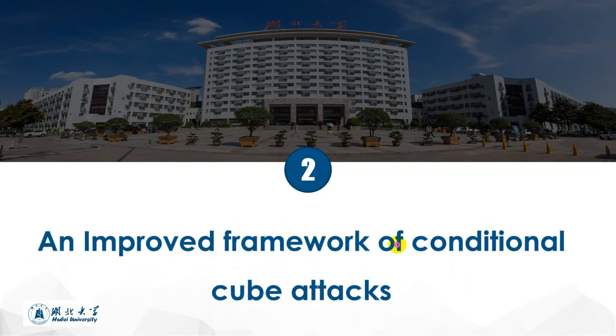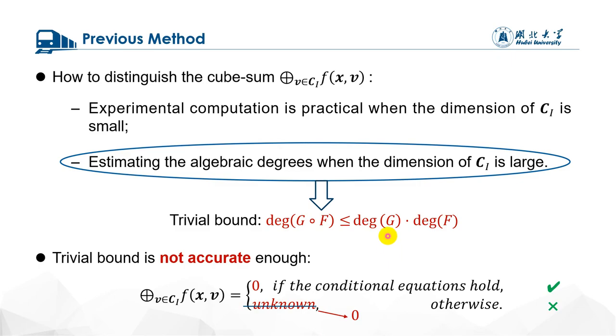Now we introduce our improved framework of conditional cube attacks. The key point of conditional cube attacks is to distinguish the cube sum for given cube set. There are two methods. First one is that when the cube is small, then we can compute the exact value of cube sum by practical experiments. But when the cube is very large, it is impossible to try experiments because the computational complexity is O(2^n) if the size of cube is 2^n.